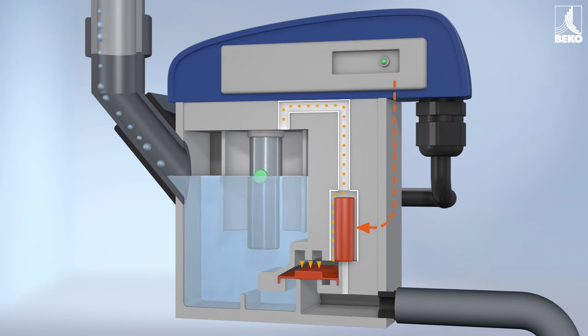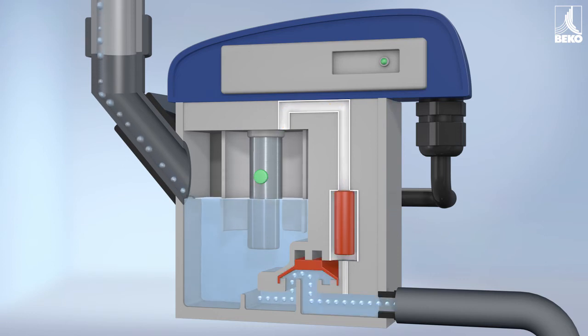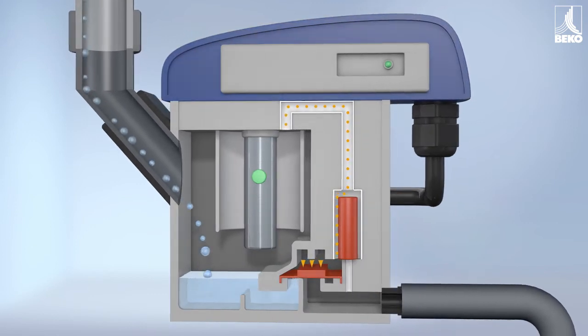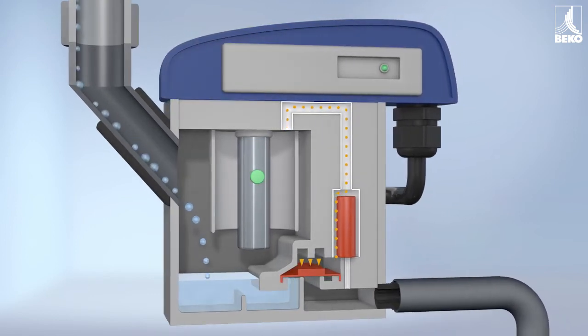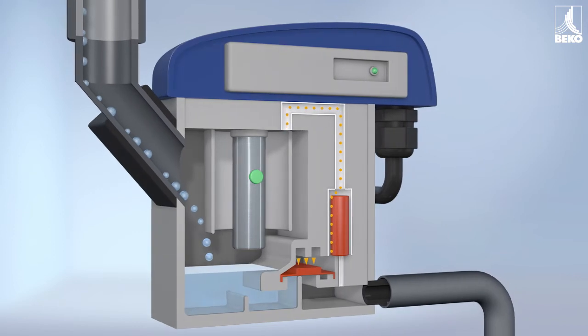The space above the membrane is vented. Simultaneously, the pressure on the underside increases, allowing the condensate to flow into the outlet line.